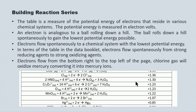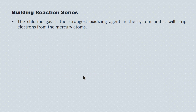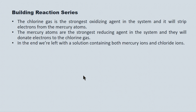In this snippet, if we mixed metallic mercury with chlorine gas, we would see a flow of electrons from the mercury to the chlorine gas. The chlorine is oxidizing the mercury, converting it into mercury ions by stripping electrons off of it. Similarly, the chlorine gas — the strongest oxidizing agent in the system — is being converted into chloride ions. The mercury atoms are the strongest reducing agent and donate electrons to the chlorine gas, leaving us with a solution of mercury ions and chloride ions.